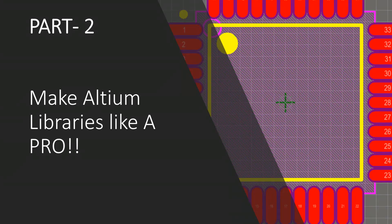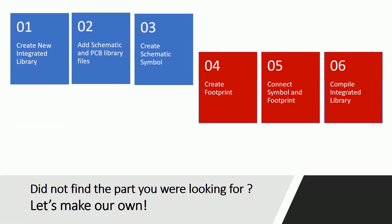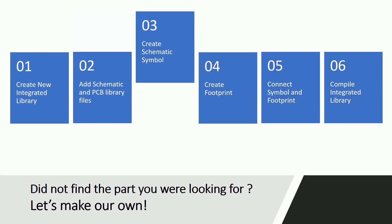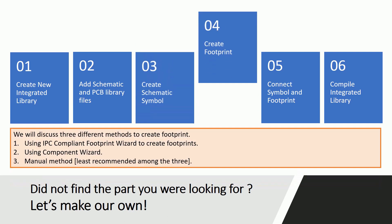Hi guys, we are back with part 2 of the tutorial 'Make Altium Libraries Like a Pro.' In part 1 we learned about integrated libraries, how we can add schematic and PCB library files to an integrated library, and different methods to create schematic symbols. Now in this tutorial we will learn three different methods to create footprints. We will discuss the best method first, which is using the IPC Compliant Footprint Wizard, then the Component Wizard, and finally the manual method, which is the least recommended.